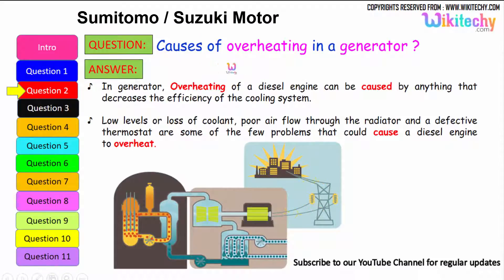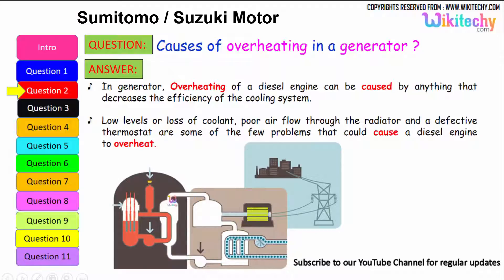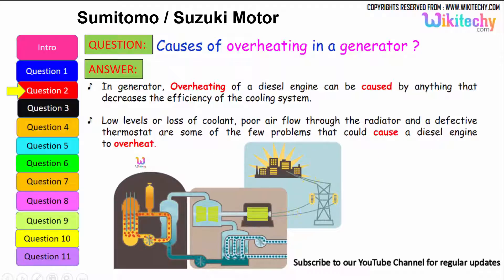Let us move on to the next question: causes of overheating in a generator. In a generator, overheating of a diesel engine can be caused by anything that decreases the efficiency of the cooling system. It can be due to loss of coolant or low coolant levels, poor air flow through the radiators, and a defective thermostat — these are some of the problems that could cause a diesel engine or generator to overheat.